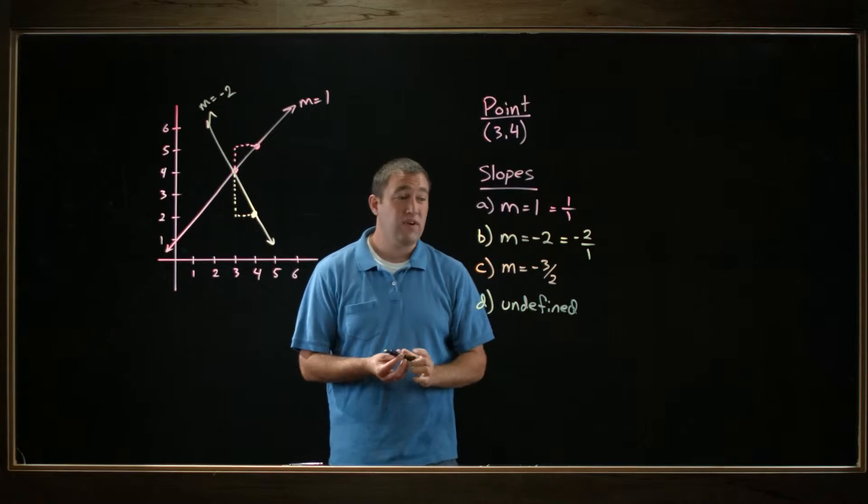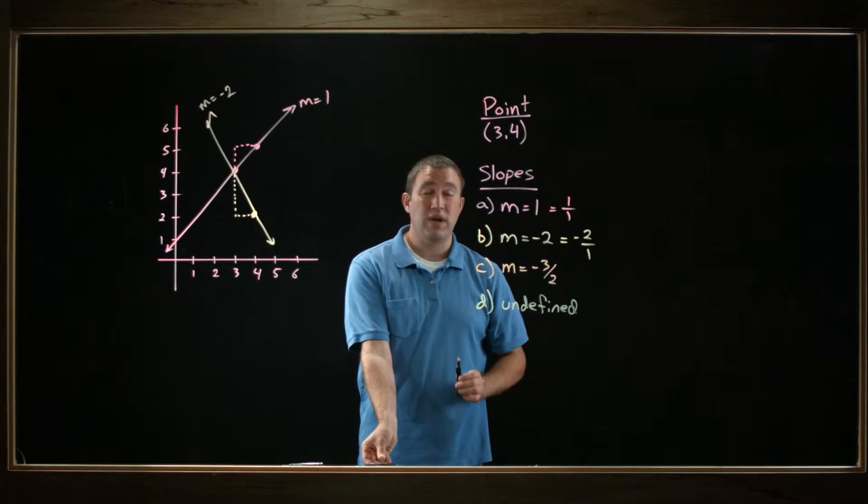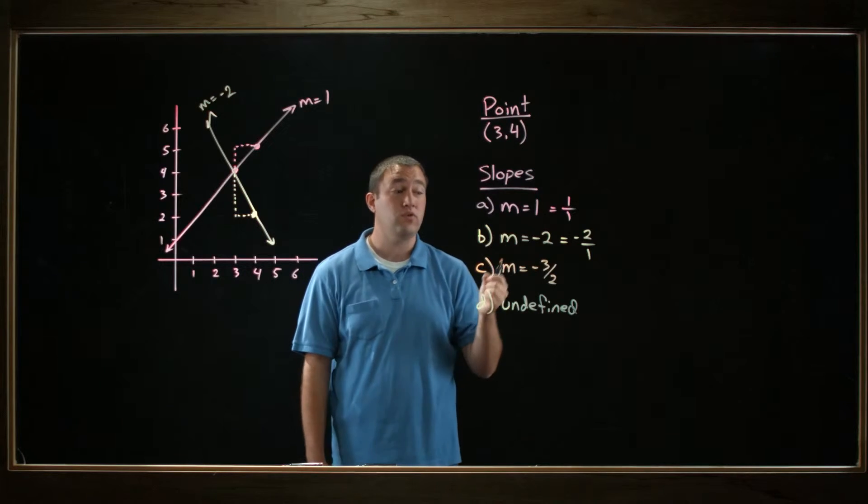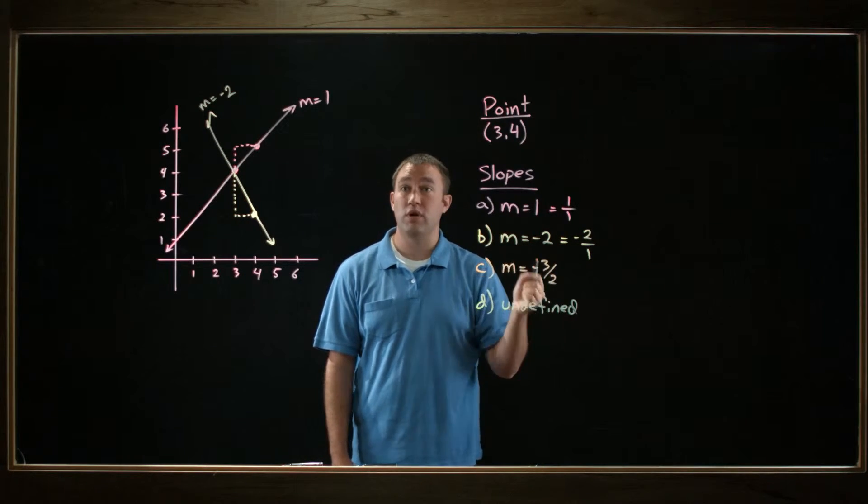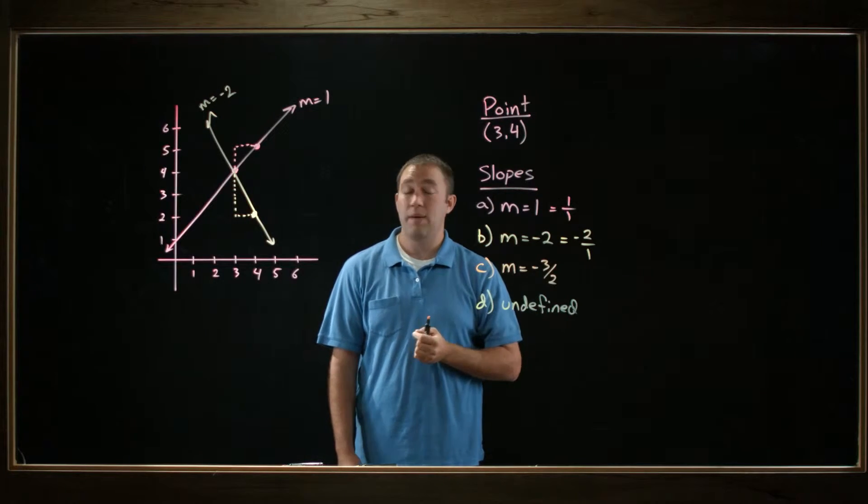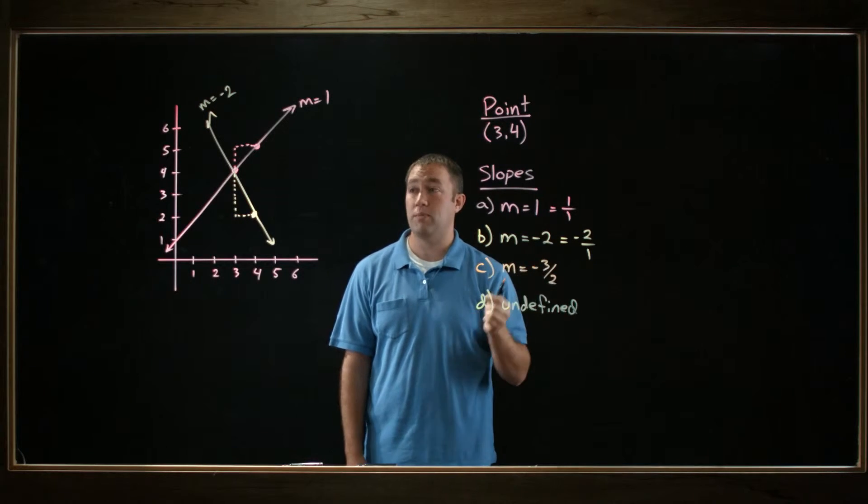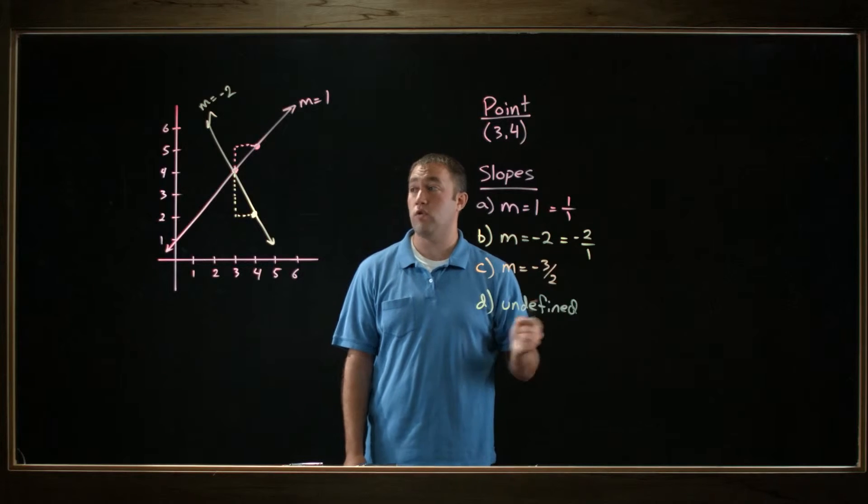Now for the next one, I've got a slope of negative 3 halves. And again, I've got that negative that I've got to consider. I don't want to do negative 3 over negative 2. I want to do negative 3 over 2. So I'm going to do the same strategy that I did before, and I'm going to go down 3 and over 2 this time.